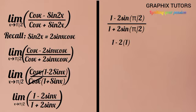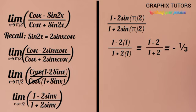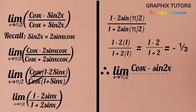So we now have (1 - 2 × 1) divided by (1 + 2 × 1), because sin(π/2) is 1. So 2 times 1 is 2, and we're having (1 - 2) over (1 + 2). So 1 - 2 is -1, and 1 + 2 is 3. Therefore the limit as x tends to π/2 of (cos x - sin 2x)/(cos x + sin 2x) equals -1/3.